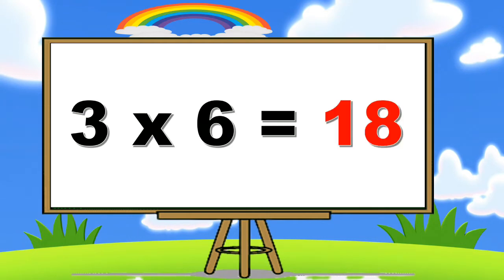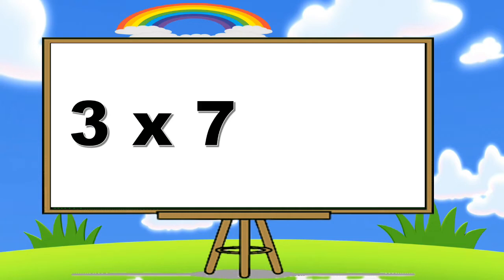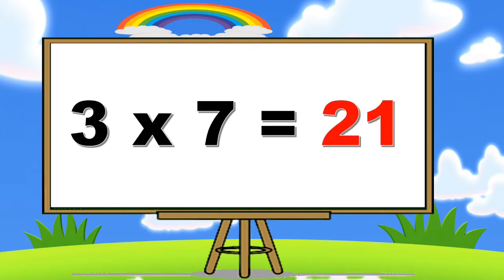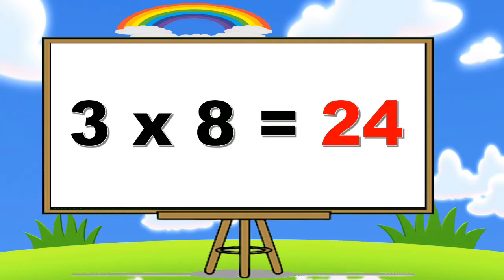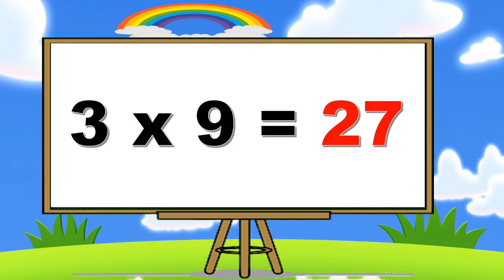Three sixes are eighteen. Three sevens are twenty-one. Three eights are twenty-four. Three nines are twenty-seven. Three tens are thirty.